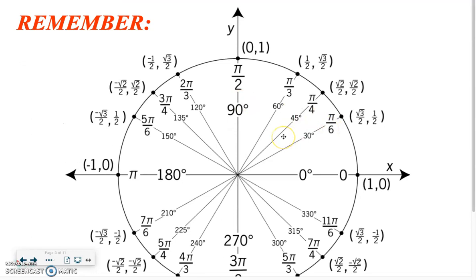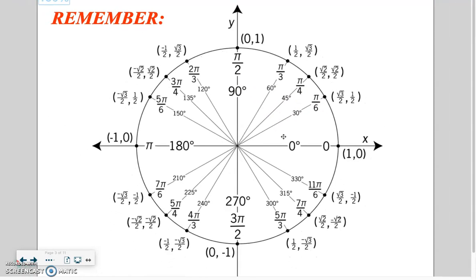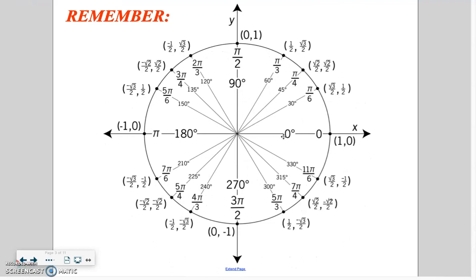With the rose curves yesterday, we were working with the unit circle and it was really all about knowing your angles — correctly identifying where π/6 is, where π/3 is, adding 2π, those types of things. We didn't really touch the coordinates. Now with limaçons, we're going to be using not just the angles but also the coordinates.